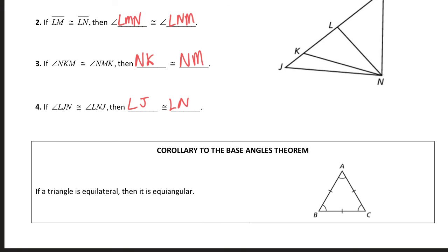If a triangle is equilateral, then it's equiangular. So if all three sides of a triangle are congruent, that means all three angles are also congruent. We can assume that. If you're given all three sides are the same, you can assume all three angles are the same.